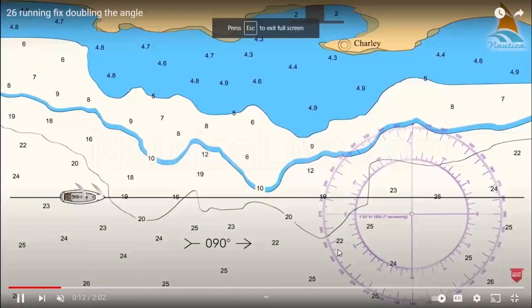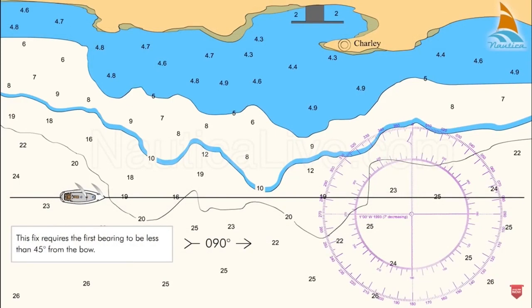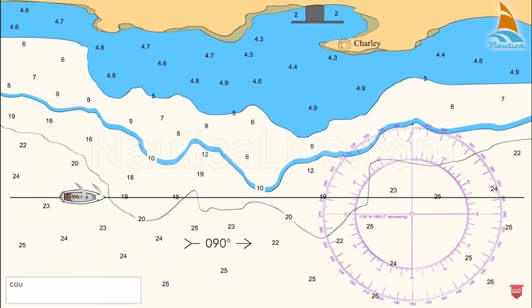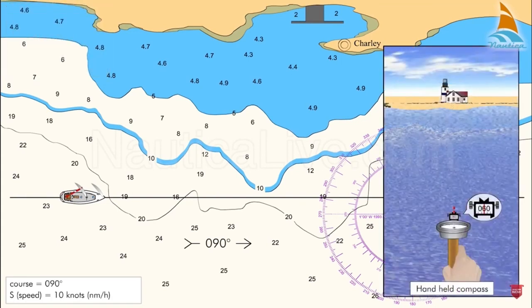Good afternoon. Our topic is about Bow and Beam Bearing. The technique requires the first bearing to be less than 45 degrees from the bow. For our example, we have a course line of 090 degrees and our speed is 10 knots.